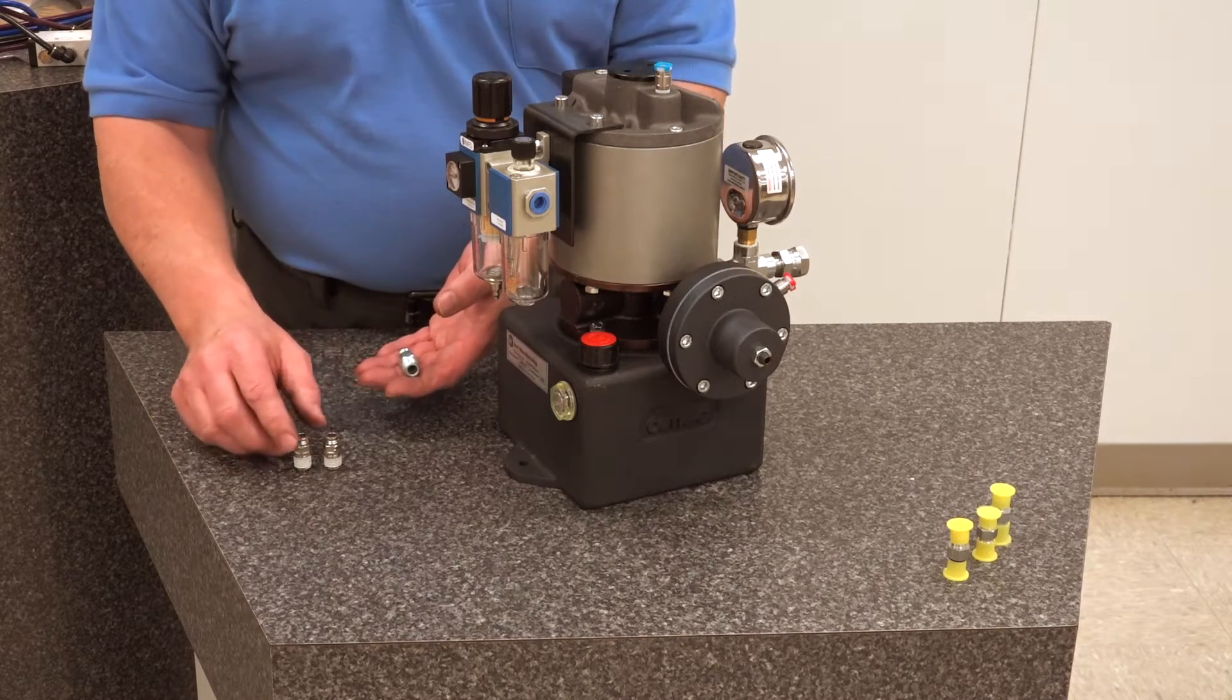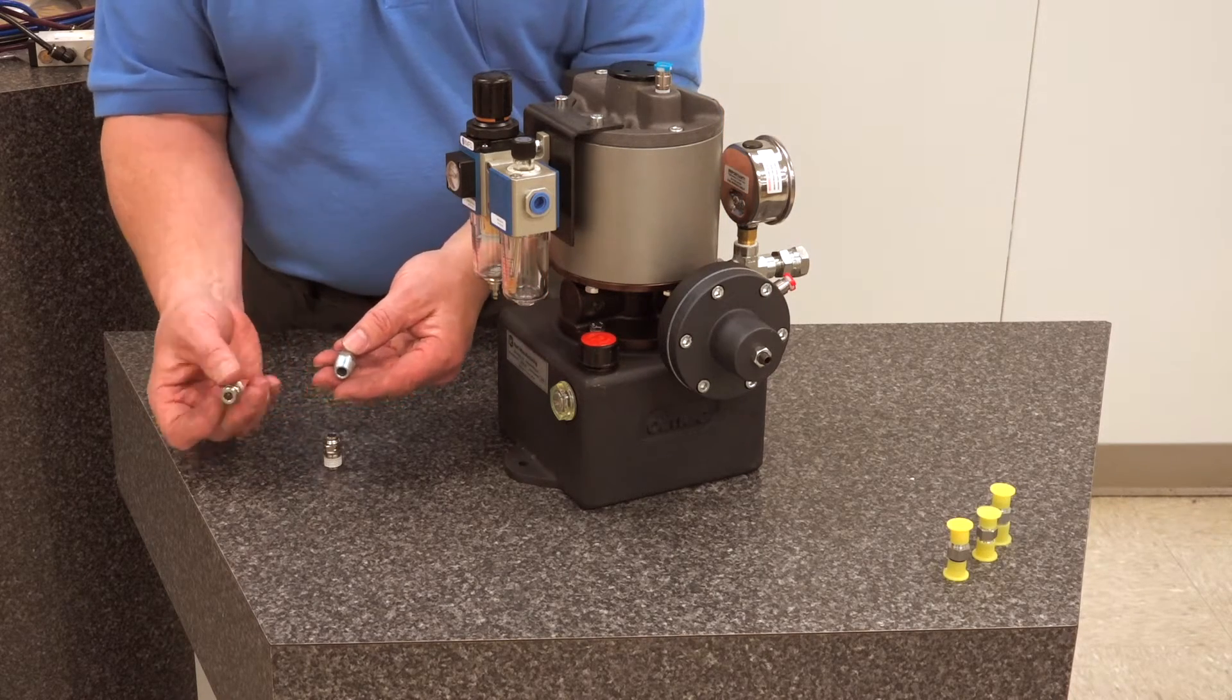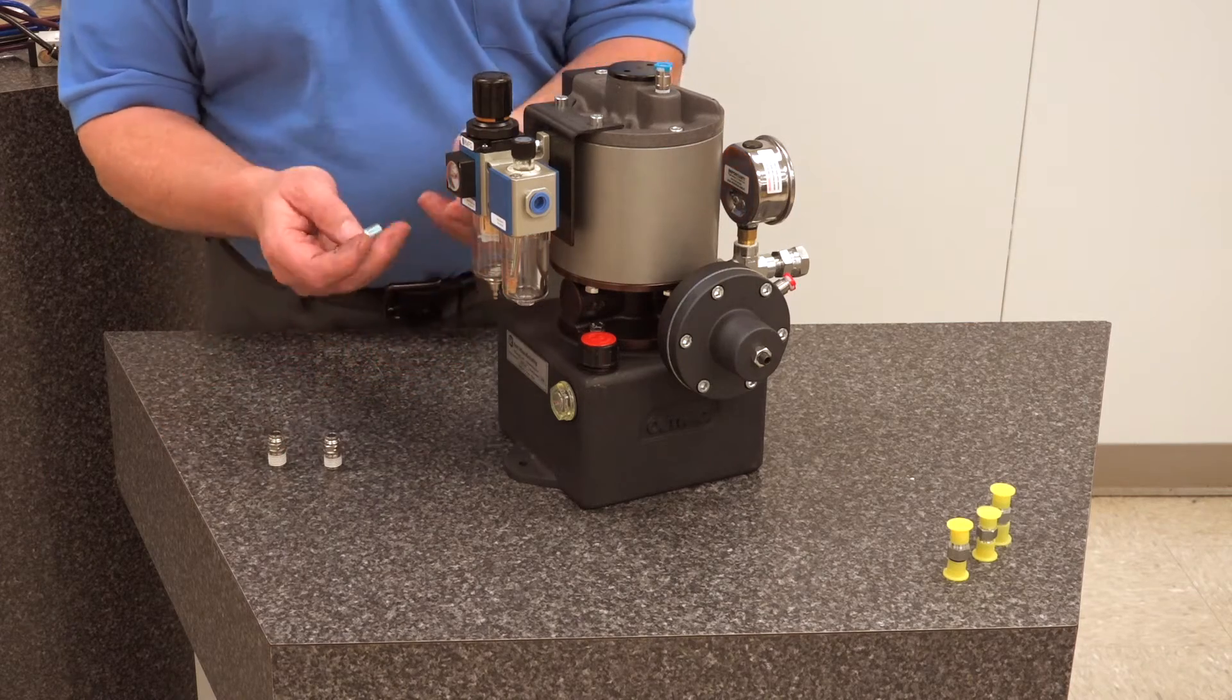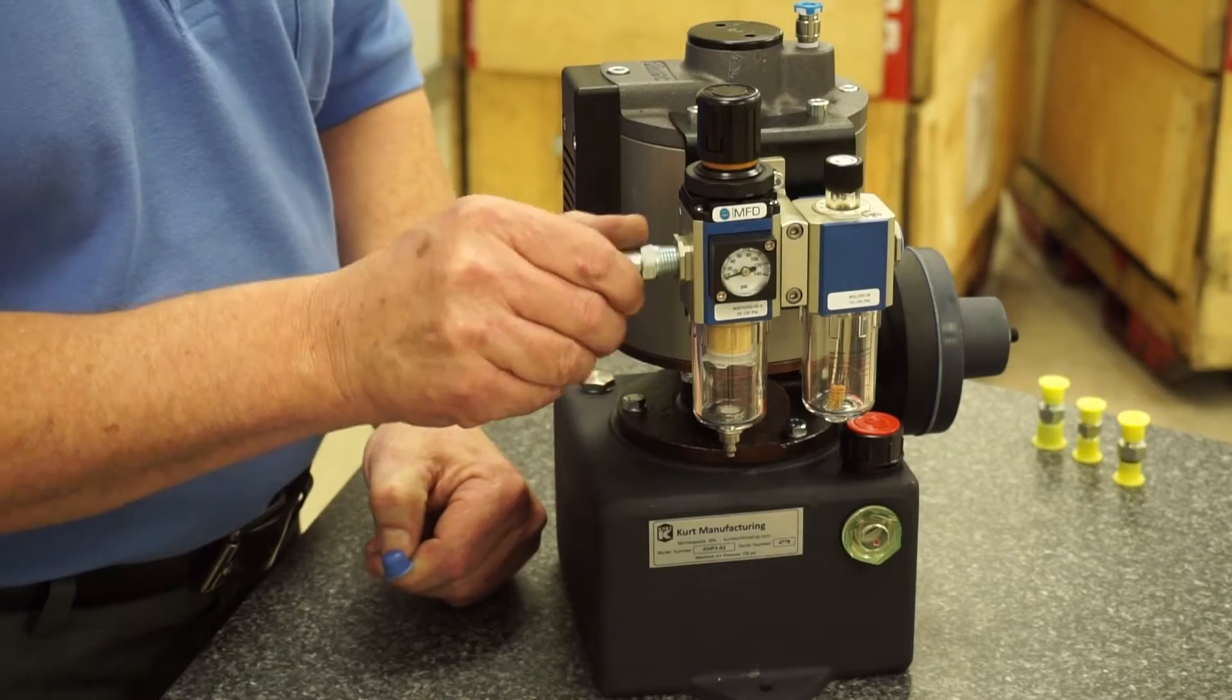The first thing you're going to want to do is choose your air source, and you have two different ways of doing this. You can either use the push-in or the standard type connection. That's going to simply screw into your input air right here.